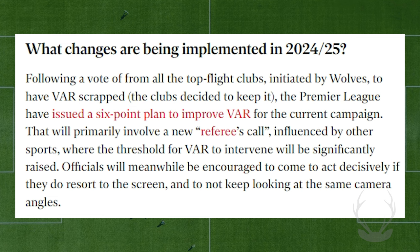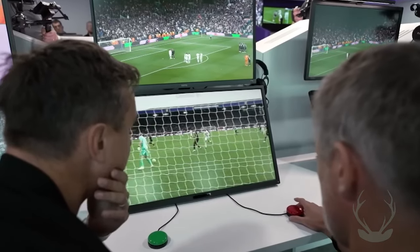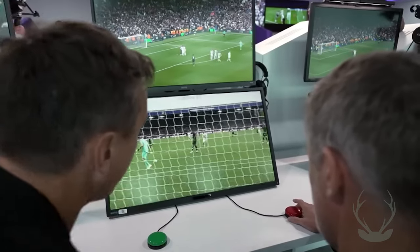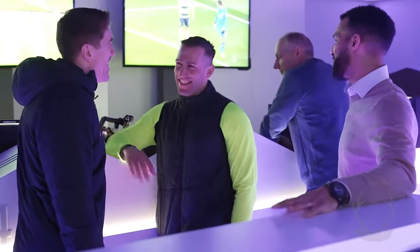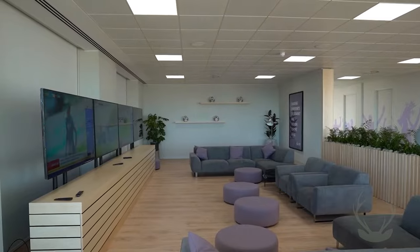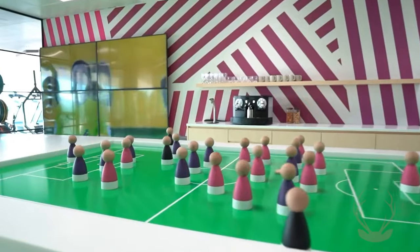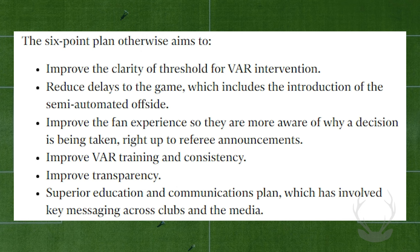They seem to be trying to mitigate some of the damage that VAR has been causing by implementing a six-point plan this year. The six points are: one, improve the clarity of the threshold for VAR intervention; two, reduce delays to the game, which includes the introduction of semi-automated offside; three, improve the fan experience so they are more aware of why a decision is being taken, right up to referee announcements; four, improve VAR training and consistency; five, improve transparency; and six, a superior education and communication plan involving key messaging across clubs and the media.